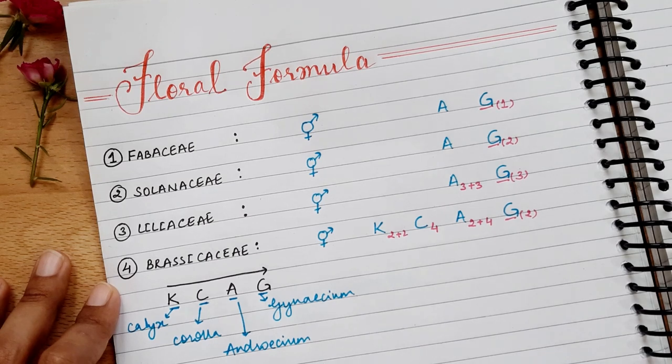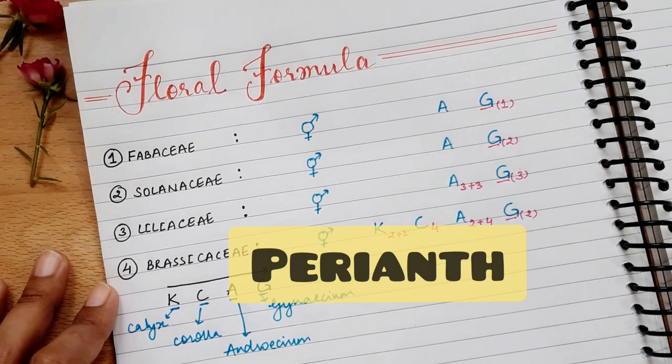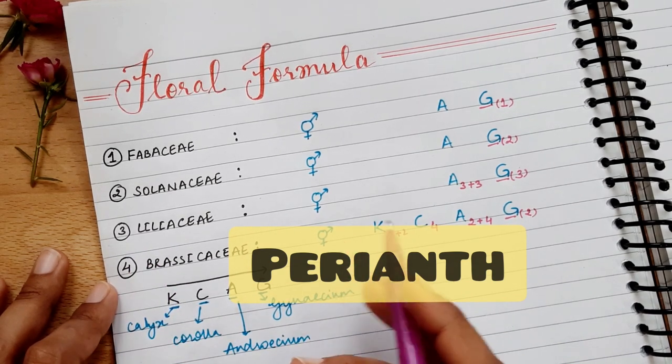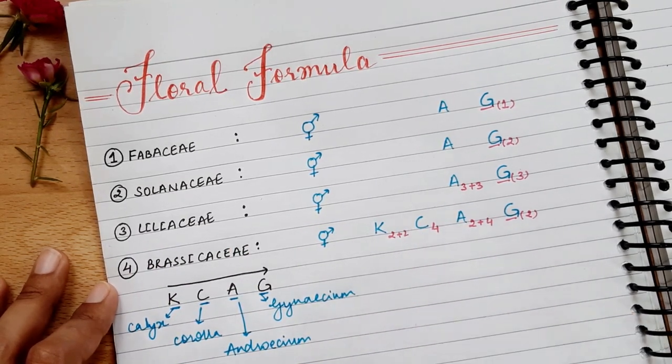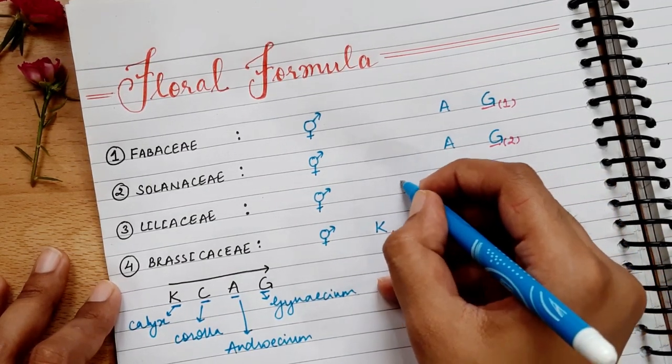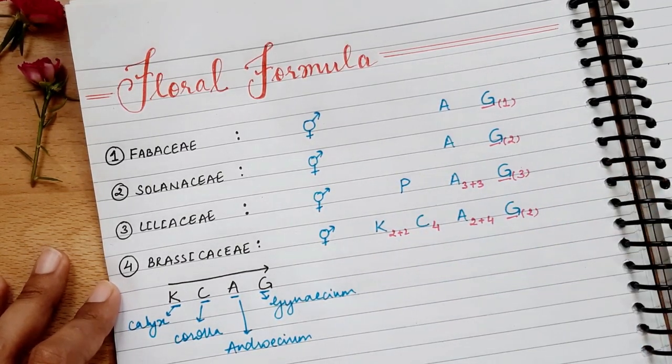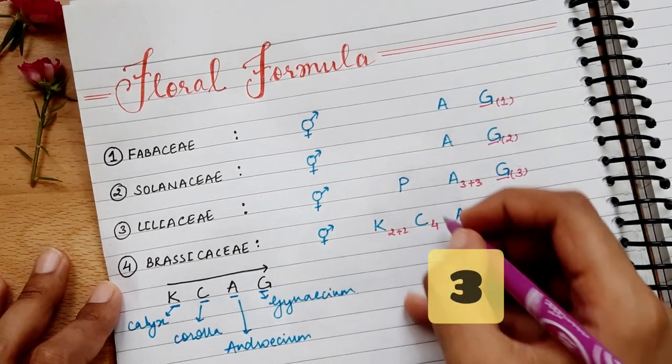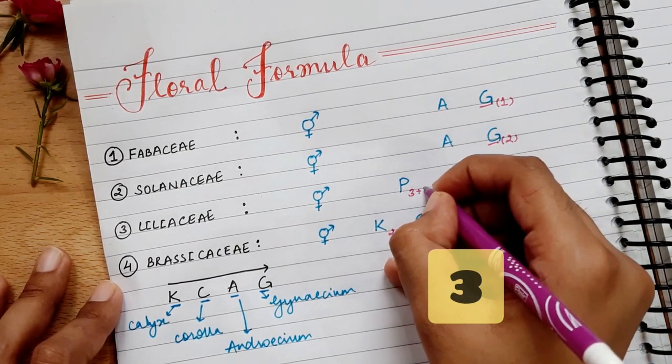Now in Liliaceae family, Corolla and Calyx are fused. This fused Calyx and Corolla we call the perianth, which we denote from P. And in Liliaceae, everything is 3. So here we will add 3 plus 3. And because it is fused, we will add a bracket. You can see Liliaceae's P, A, and G, and its order is in 3.